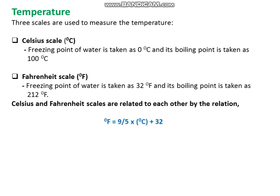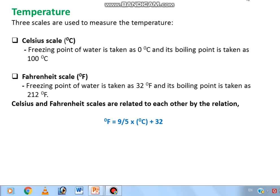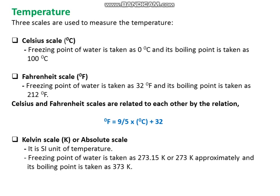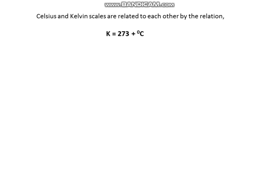Degree Fahrenheit = (9/5) × degree Celsius + 32. Kelvin, or absolute scale, is the SI unit of temperature. The freezing point of water is taken as 273.15 Kelvin (approximately 273 Kelvin) and its boiling point is taken as 373 Kelvin. Celsius and Kelvin scales are related by: K = 273 + degree Celsius.